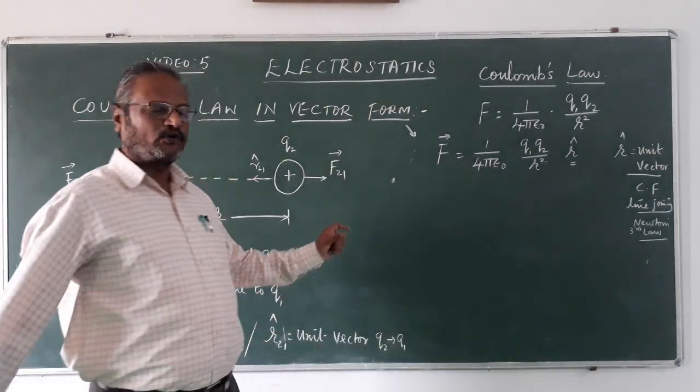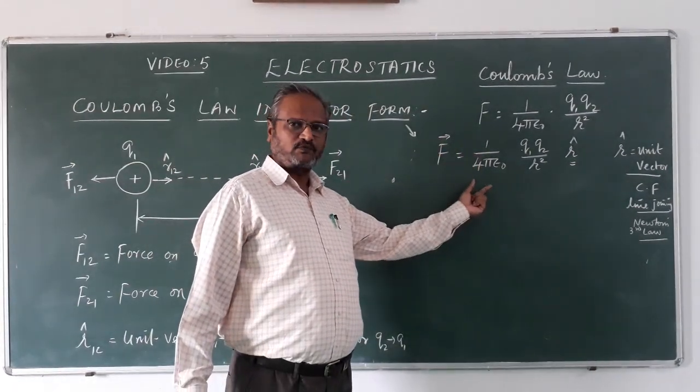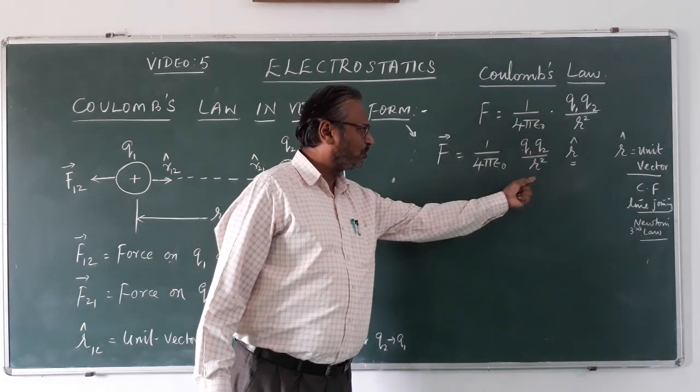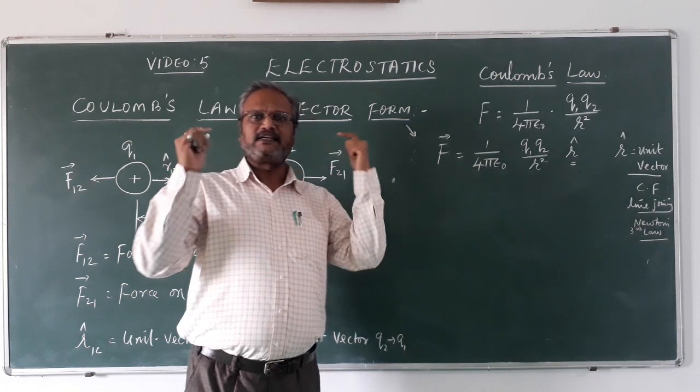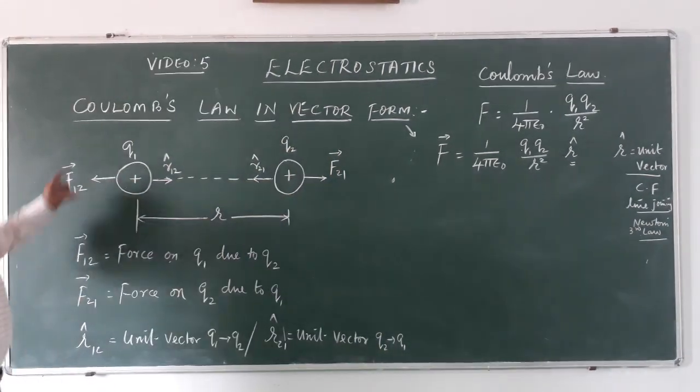So I bring a unit vector r̂. So that the vector form is F vector equals 1 upon 4πε₀ q₁q₂ upon r², and just to say, a unit vector which is acting in the same line of action.